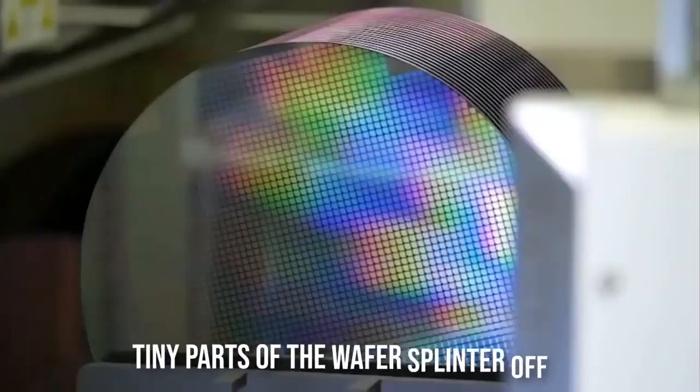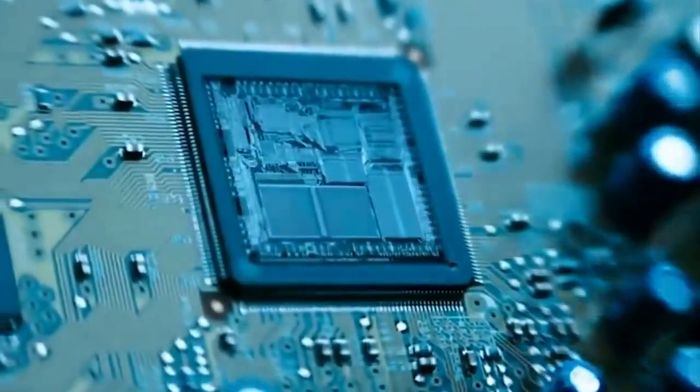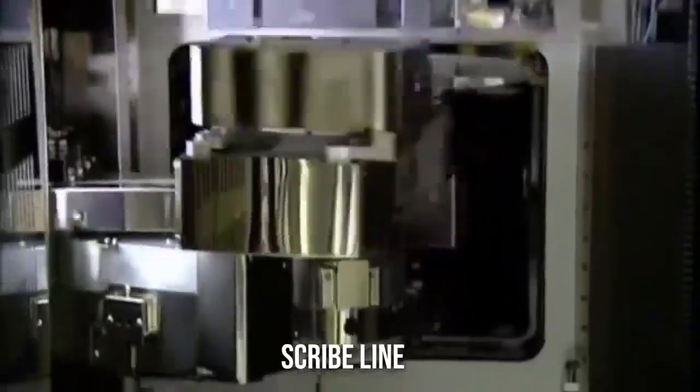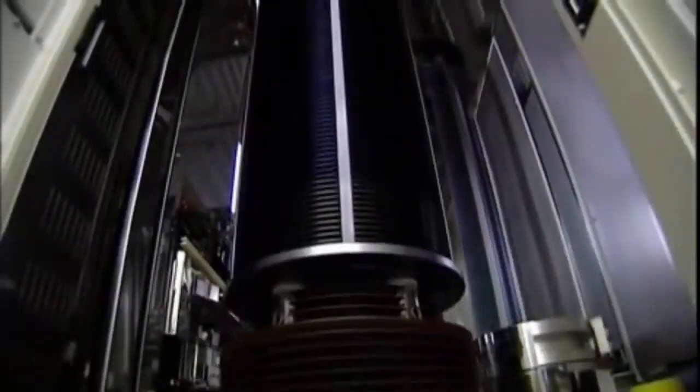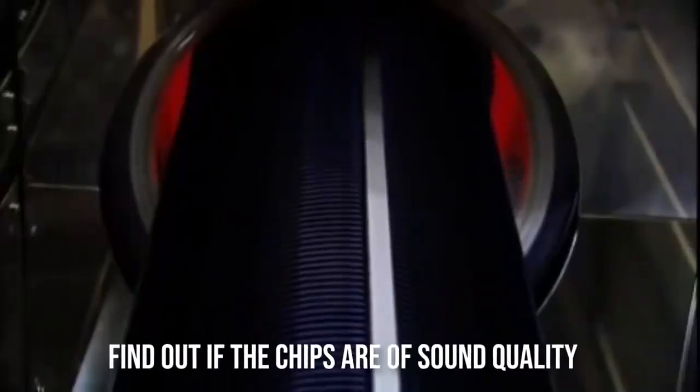This is because tiny parts of the wafer splinter off during the sawing process. Hence, a certain amount of space known as the scribe line is always kept between the individual chips. There are structures also put in this scribe line to take measurements immediately after production to find out if the chips are of sound quality.